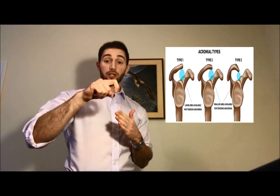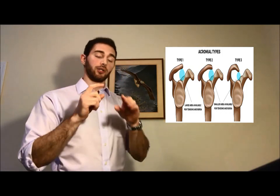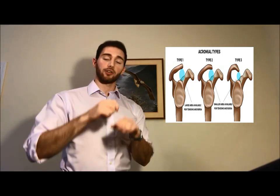The acromion, depending on the type you have, can either be straight, curved, or really curved in a type 3. You have the supraspinatus and the acromion is going on it, and you're really emphasizing that when you internally rotate and have what we call a pronated grip. If you have some serious impingement that's been bothering you, try to do a supinated grip.